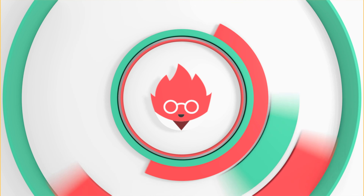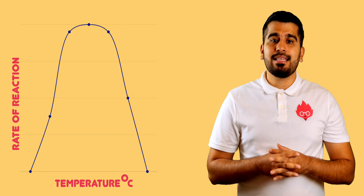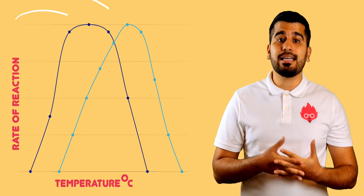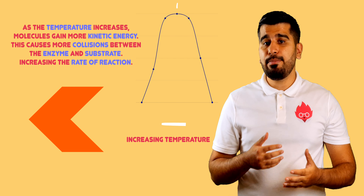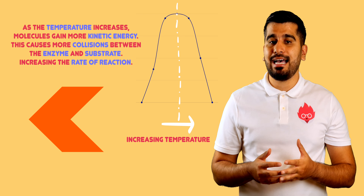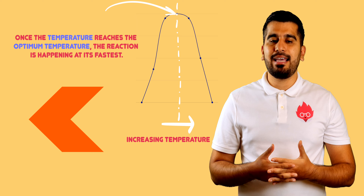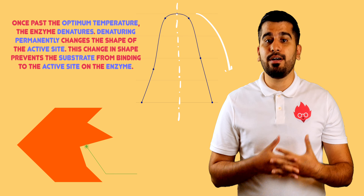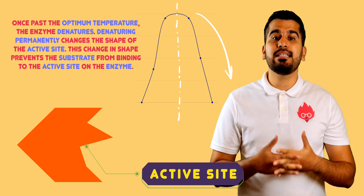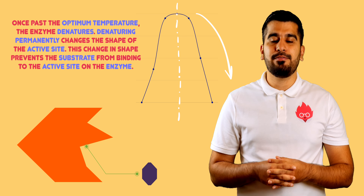This process is nearly always irreversible. If you look at the graph, you can see that it produces a bell shape. Depending on what enzyme you look at, you will get a different optimum temperature. In this image, you can visually see what is happening to the active site as the temperature passes the optimum temperature. The shape of the enzyme is unchanged up to the optimum temperature. Past the optimum temperature, the enzyme's active sites begin to change, preventing the substrate from binding, and so the reaction eventually stops.